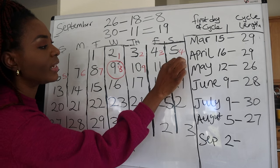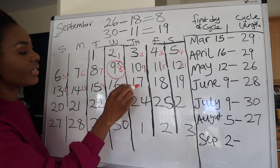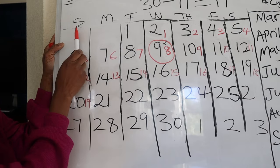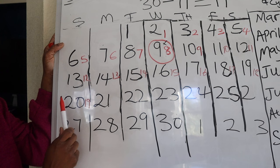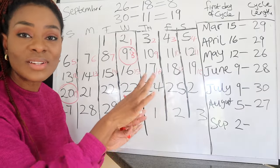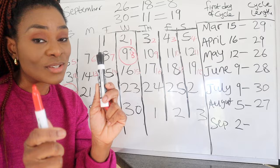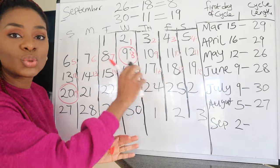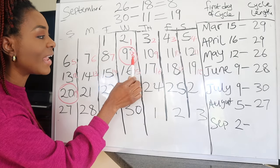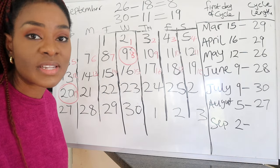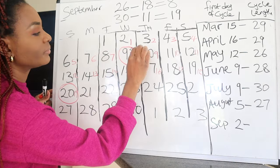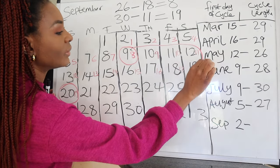Continue counting from day 8: 9, 10, 11, 12, 13, 14, 15, 16, 17, 18, 19. Day 19 is Sunday, September 20th — that is the last day of your fertile window. Circle that day on your calendar. I'm using a black pen for the actual September calendar and a red pen for the menstrual cycle calculations so you can see the difference.